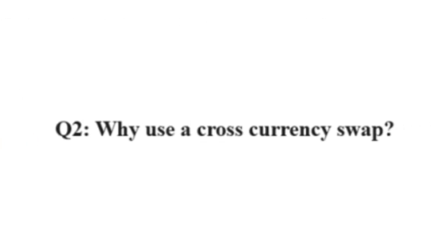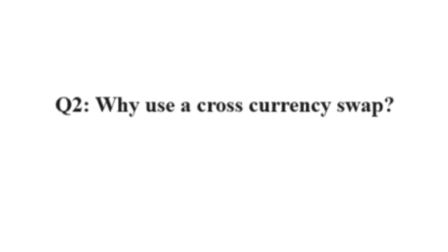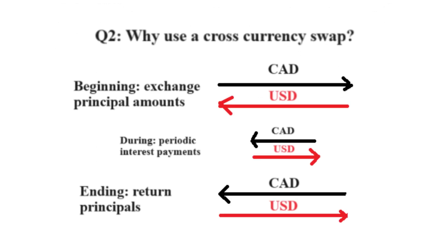Question 2: Why should we use a cross-currency swap? What are the objectives and the advantages? One advantage of a cross-currency swap is that it allows you to fix the exchange rate in the future. Indeed, at the beginning of the swap, the two parties exchange the principal amounts. At the end of the swap, they return the principal amounts back to each other. The exchange rate used to determine the principal amounts is decided at the beginning of the swap contract.